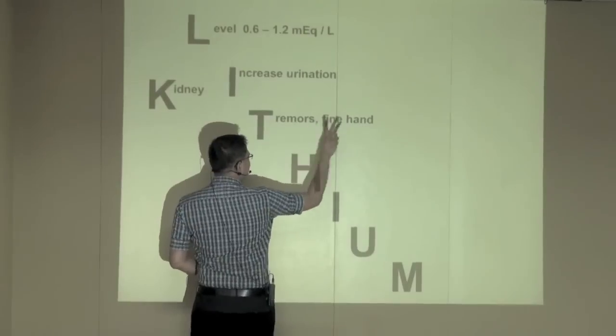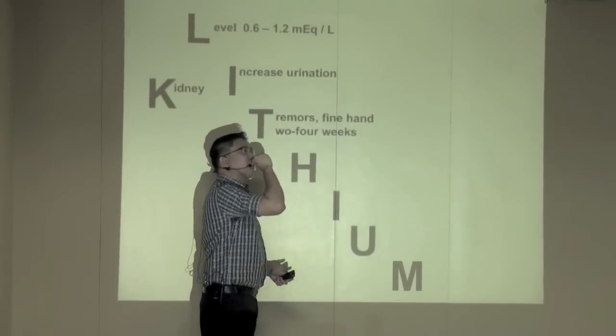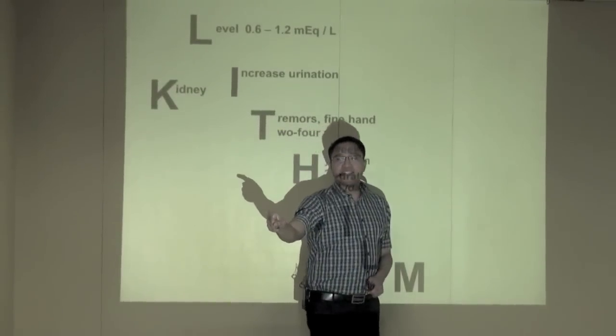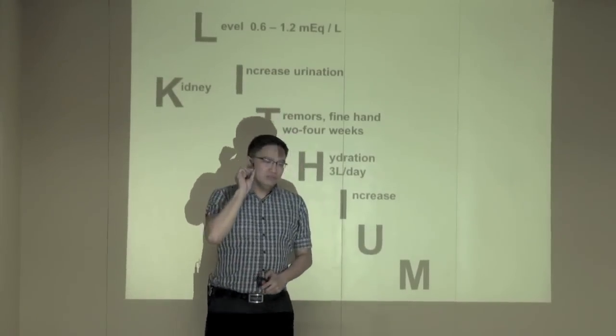Tell me. What does this stand for? Letter T. What's this? Two to four weeks. What's this? Letter H. How many liters again? Three. The other I going up? Increase in urination. And what's the letter N? Nausea, vomiting, diarrhea. Very good class.